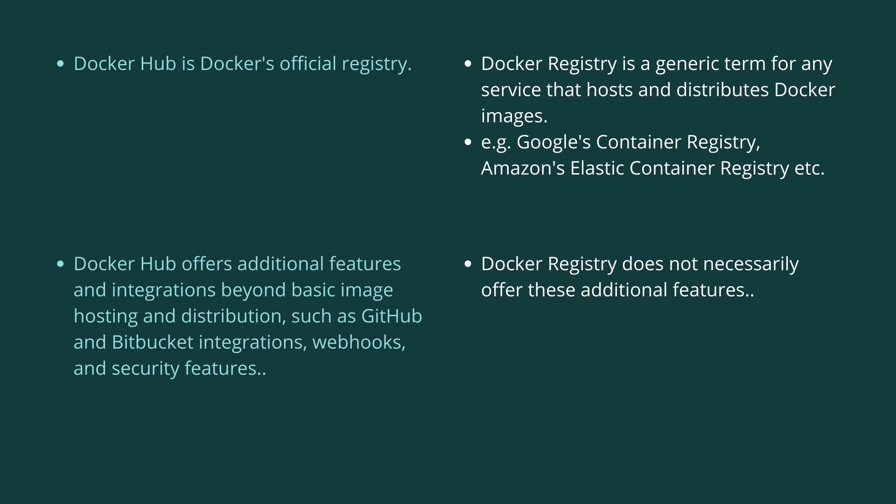Docker Hub is Docker's official registry, whereas Docker Registry is a generic term for any kind of service that hosts and distributes Docker images — for example, AWS Elastic Container Registry or Google's Container Registry.